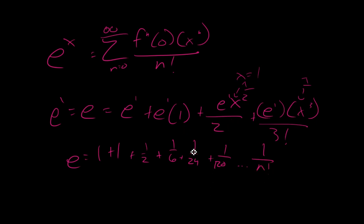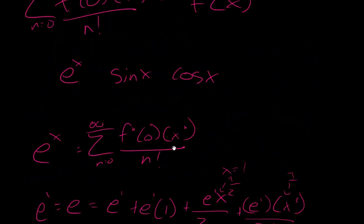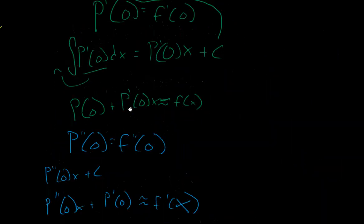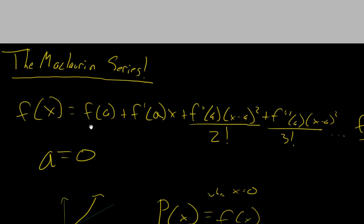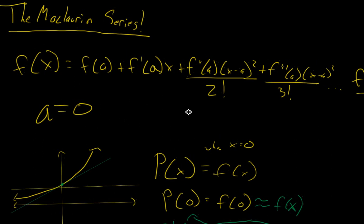And that is one way of deriving the value for e. You can really do this with lots of functions, but this is where it's coolest and probably the most use from what we've seen. But that's simply why the Maclaurin series is the way it is, how we got to it, and why it's important. Cool stuff — I certainly think so, I hope you do too.